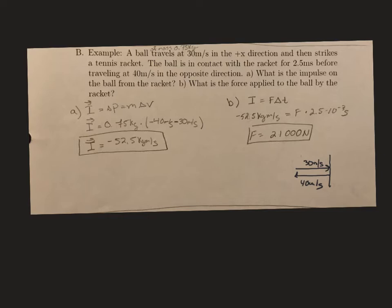I plugged in my mass here at 0.75 kilograms. Now here's the tricky part: we know initially the ball is traveling at 30 meters per second in the positive x direction, but then comes back traveling in the opposite direction. The opposite of positive x is negative x, so the final velocity is going to be negative 40 meters per second. Plugging into our impulse-momentum theorem: 0.75 kilograms times the quantity (negative 40 minus 30) meters per second. We end up with an impulse of negative 52.5 kilogram meters per second.